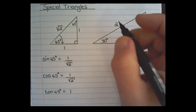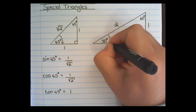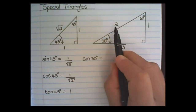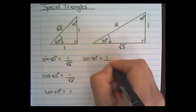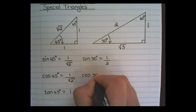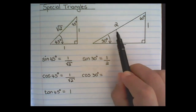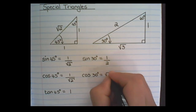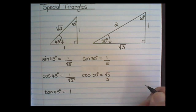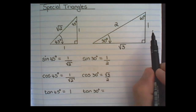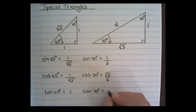In the 30-60-90 triangle, let's start with 30 degrees. The sine of 30 is the opposite over the hypotenuse, which is a half. The cosine of 30 degrees is the adjacent over the hypotenuse, which is √3 over 2. And the tan of 30 is the opposite over the adjacent, which is 1 over √3.